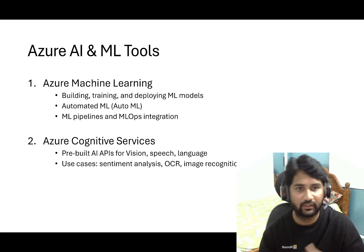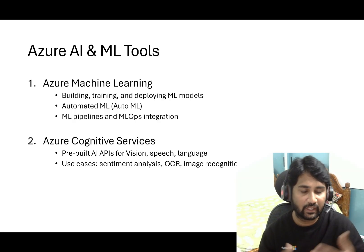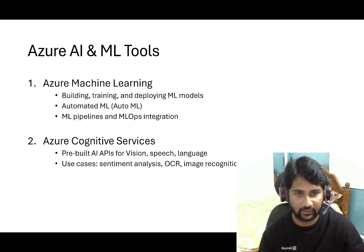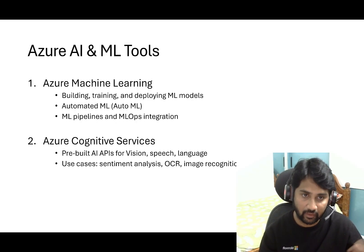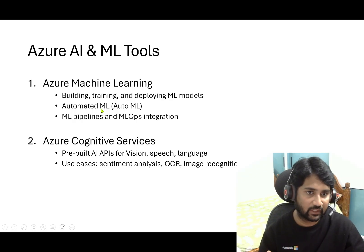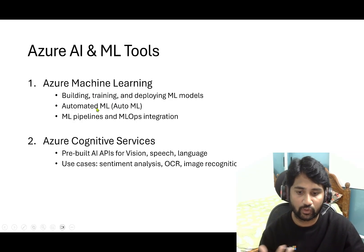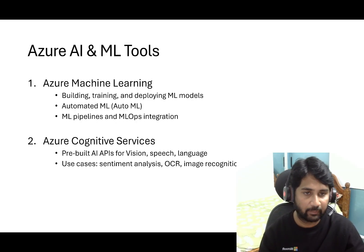The main category is Azure AI and ML tools. A few Azure services are provided specifically to serve ML and AI needs, and the idea is to learn how to consume them. The first sub-area is Azure Machine Learning service, which helps you build, train, and deploy models. You should know how to create this service, build and train a model, and deploy it. There is also AutoML — where you provide your data and a model gets deployed automatically without code — and ML pipelines and MLOps integration.